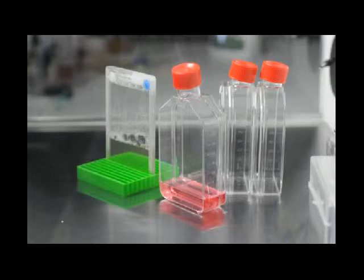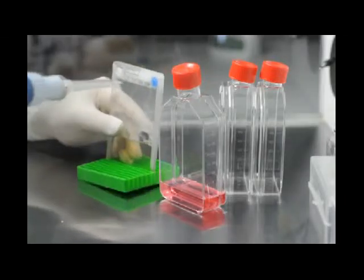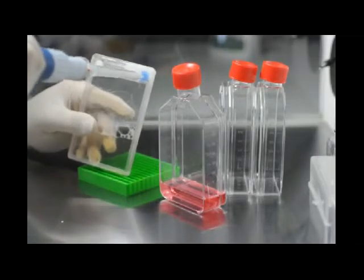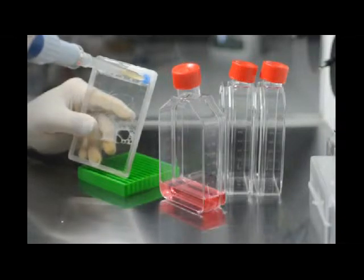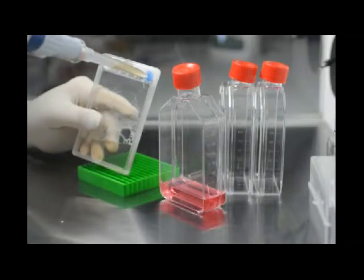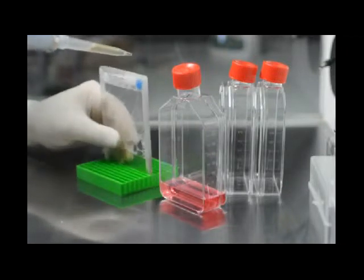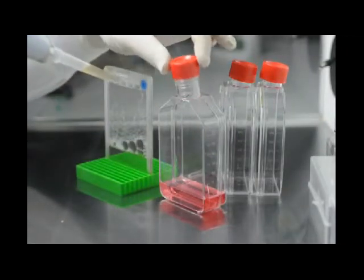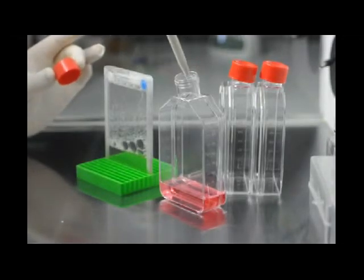To split cells to flasks, use the same method to collect the cell suspension from Patakas with a 5000 microliter tip and pipette. Introduce the cell suspension to the flask.